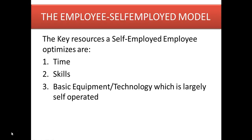The third resource is basic equipment or technology, which is largely self-operated. You have equipment and certain technology which you own and are able to make available. For example, I know people that have bought rental equipment — chairs, canopies — and during the weekend they're able to deliver those themselves. Some have a popcorn-making machine they run on weekends. You have your cake maker and everything you use for your business, but you're essentially running it yourself. Lastly, you have contacts — some businesses are driven by contacts.